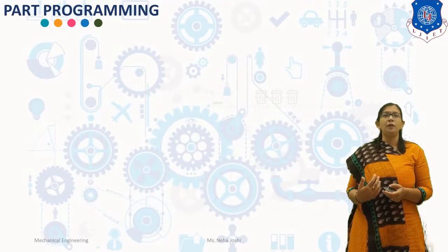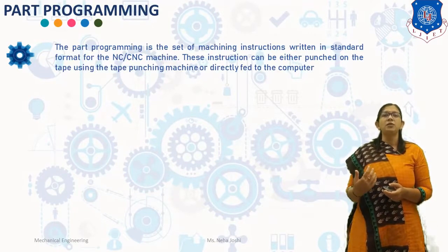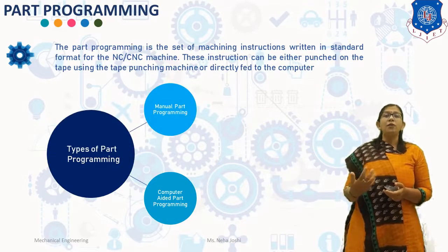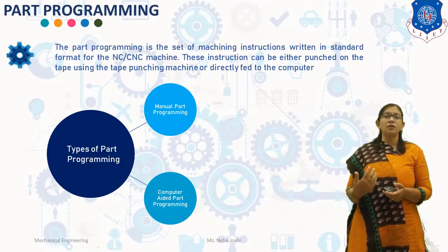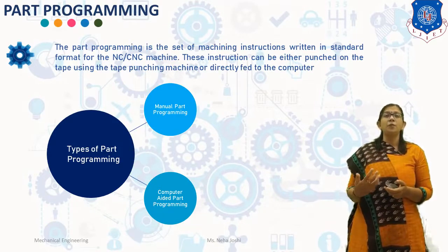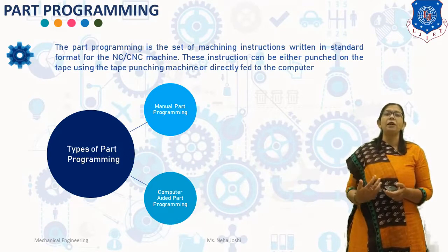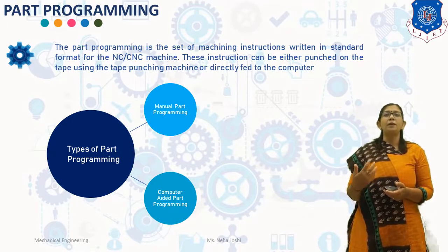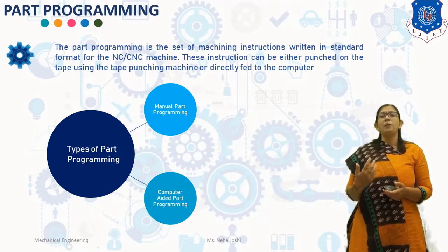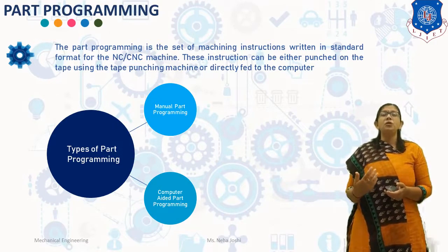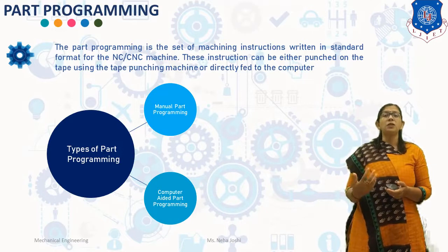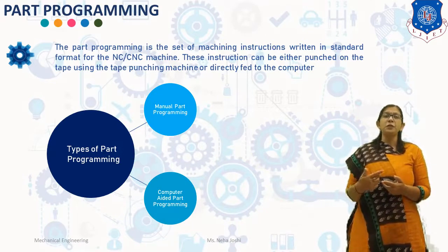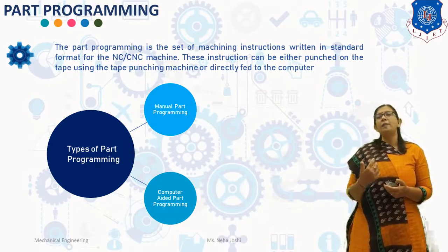First of all, what is part programming? Part programming is the set of machining instructions written in standard format for the NC/CNC machine. These instructions can be either punched on a tape using tape punching machines or directly fed to the computer. Part programming is a sequence of instructions which describes the work to be done on a part, in the form required by a computer under the control of CNC software. It is the task of preparing a program sheet from the drawing sheet. Based on the method of feeding the part programming to the machine, part programming can be of two types: manual part programming and computer-aided part programming.